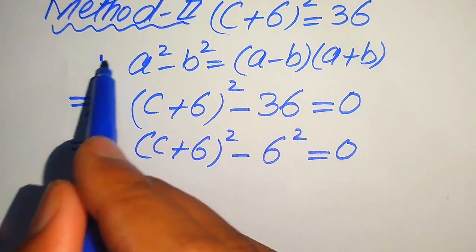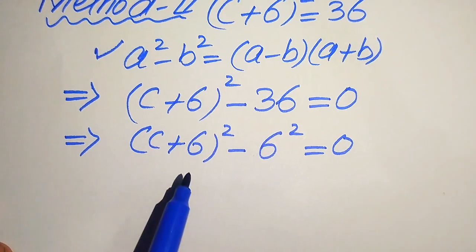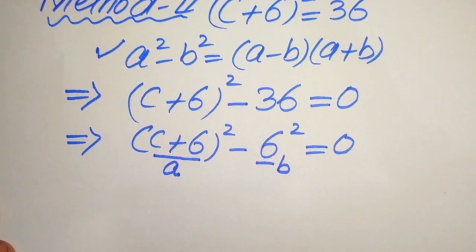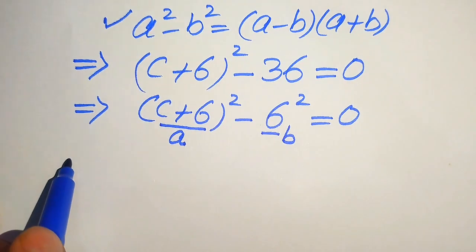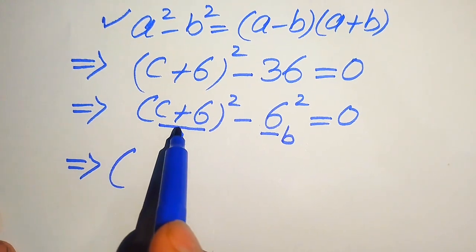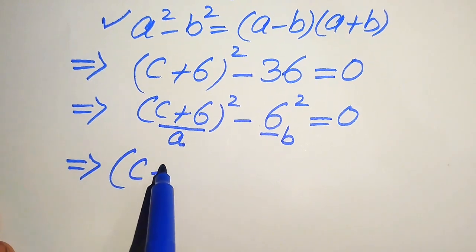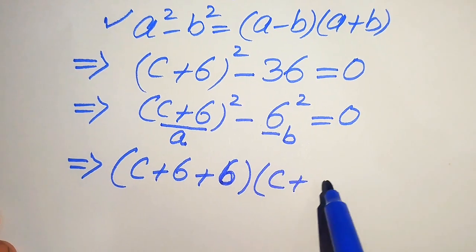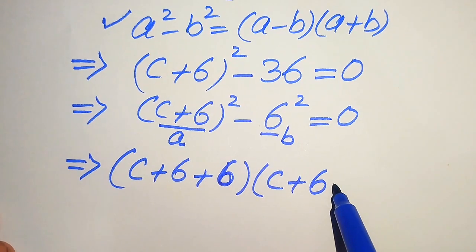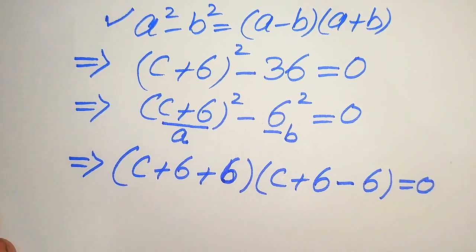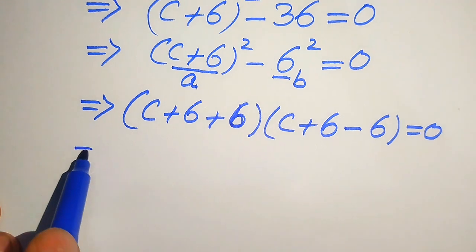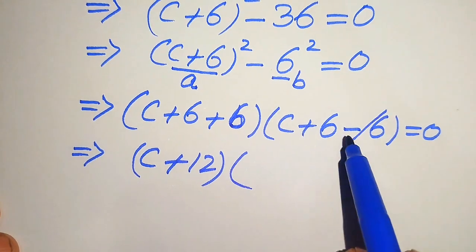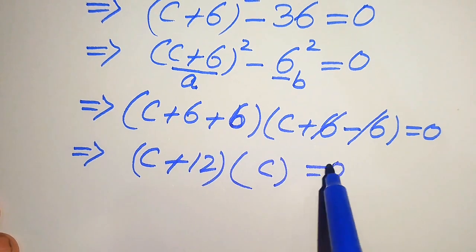Now we are ready to apply the difference of squares formula. Here a = (c + 6) and b = 6. Applying the formula gives [(c + 6) + 6][(c + 6) − 6] = 0, which simplifies to (c + 12)(c) = 0.